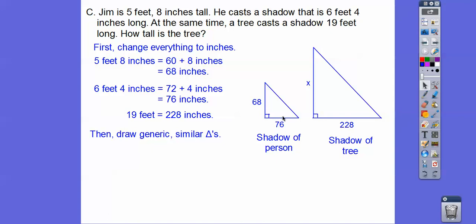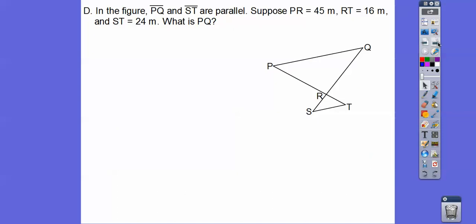Here's Jim, here's his shadow, here's the tree, here's the shadow. And then we can set up a proportion and then cross multiply. And we get 204 inches, divide that by 12, gets us 17 feet. All right, again, you can hit the pause feature. Again, I apologize.